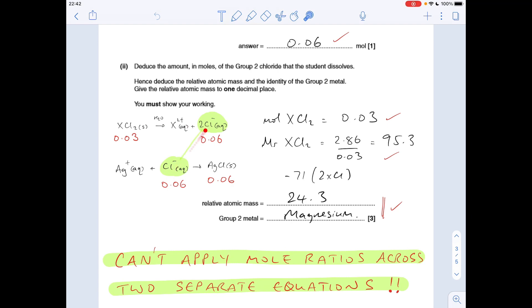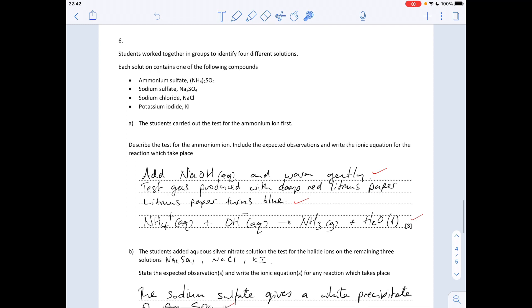Last page now. We've got the students working together in groups to identify four different solutions, each solution contains one of the following compounds. First test carried out is the ammonium ion test. It's kind of already been explained this one in the very first multiple choice question, but here it is again. What do you do? You add sodium hydroxide solution and warm gently, test the gas produced with damp red litmus paper. The litmus paper should turn blue and there's the ion equation for that reaction. It's this ammonia gas that causes that litmus paper to go blue.